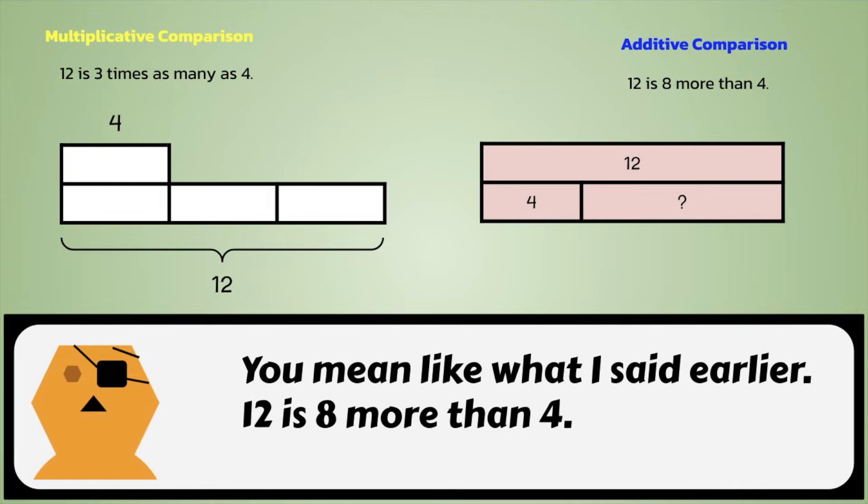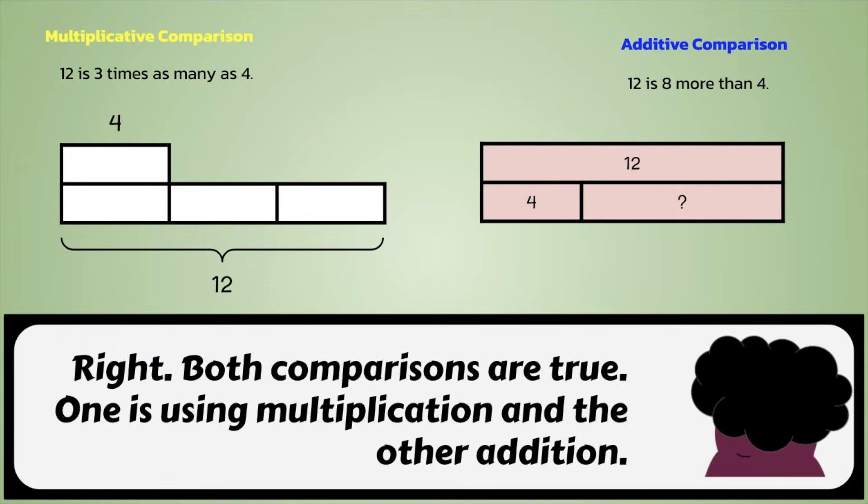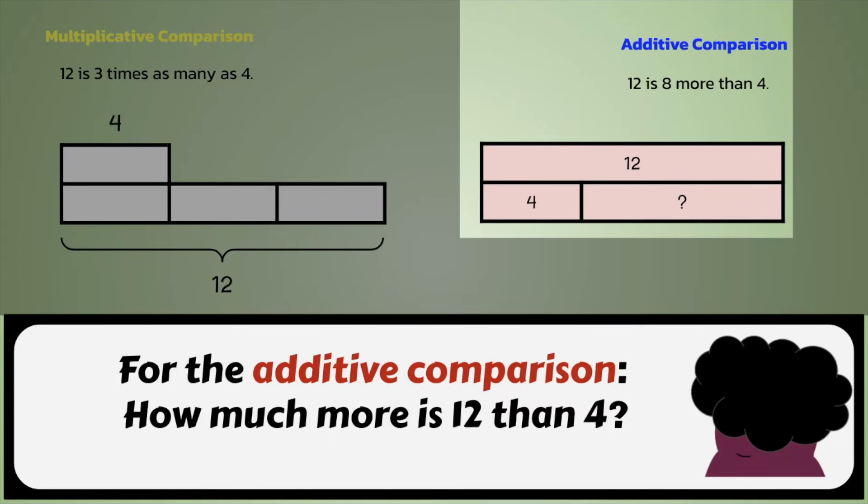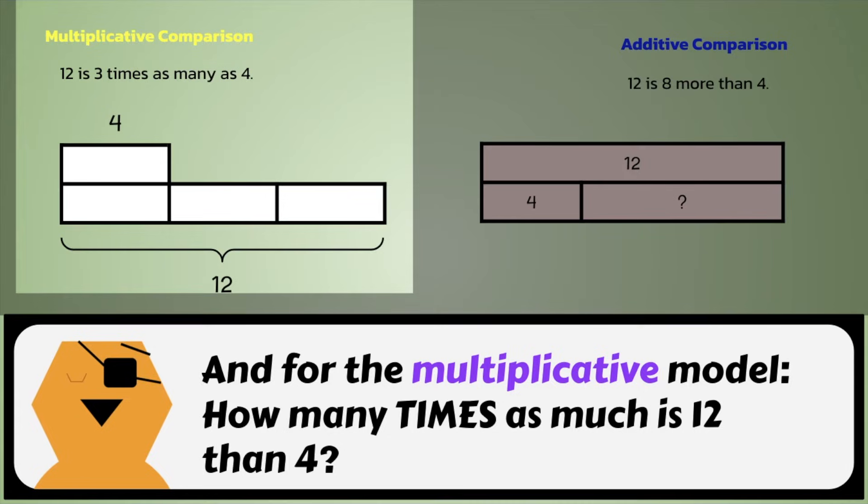You mean like what I said earlier, 12 is 8 more than 4. Right. Both comparisons are true. One is using multiplication and the other addition. For the additive comparison, how much more is 12 than 4? And for the multiplicative model, how many times as much is 12 than 4?